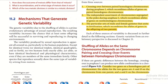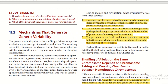Mechanisms that generate genetic variability: during meiosis and fertilization, genetic variability arises from three sources. First, crossing over between paired homologous chromosomes during Prophase I, which recombines alleles of genes on paired homologous chromosomes. Second, independent assortment of chromosomes segregated to poles during Anaphase I, which recombines alleles of genes on non-homologous chromosomes. Third, the particular set of male and female gametes that unite in fertilization, which recombines the alleles of genes in the offspring of two parents.